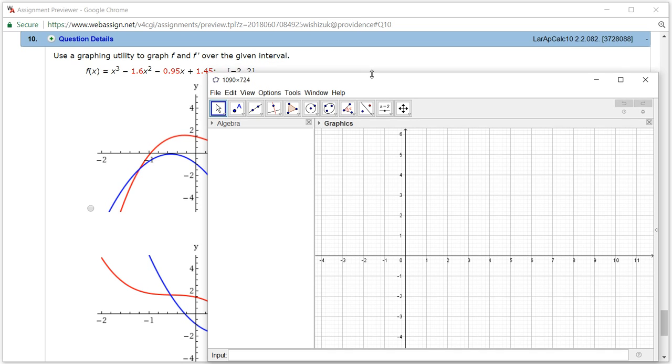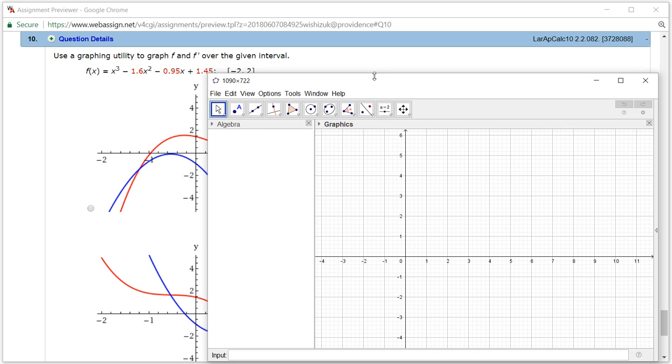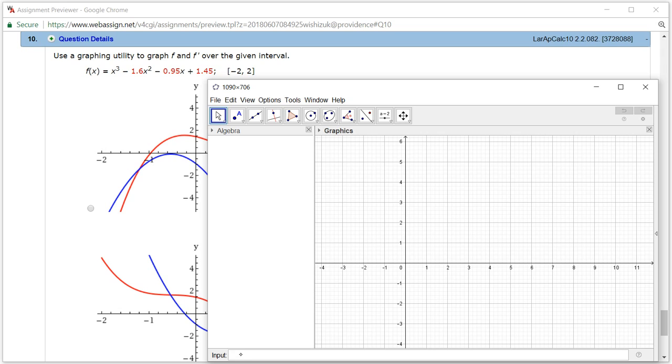Then I'm going to just type in the function. So I'm going to put here f of x is equal to x cubed minus 1.6x squared minus 0.95x plus 1.45. And I hit Enter.